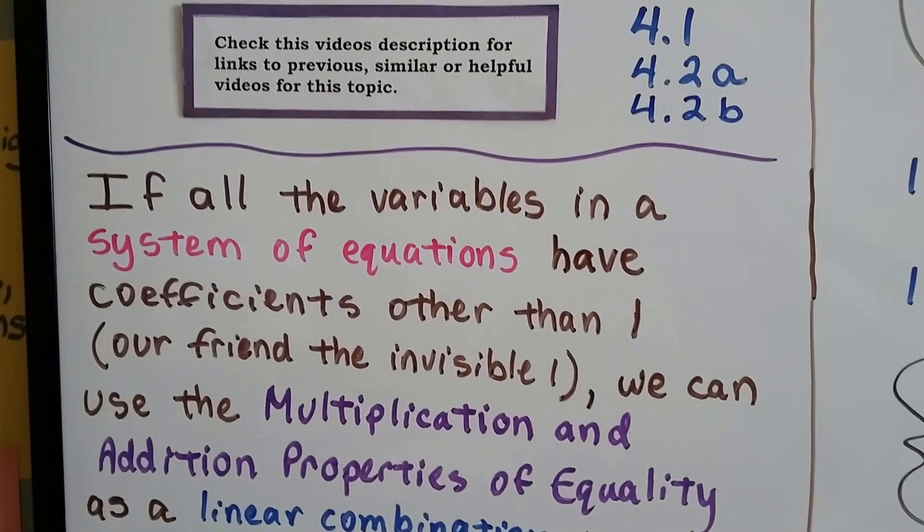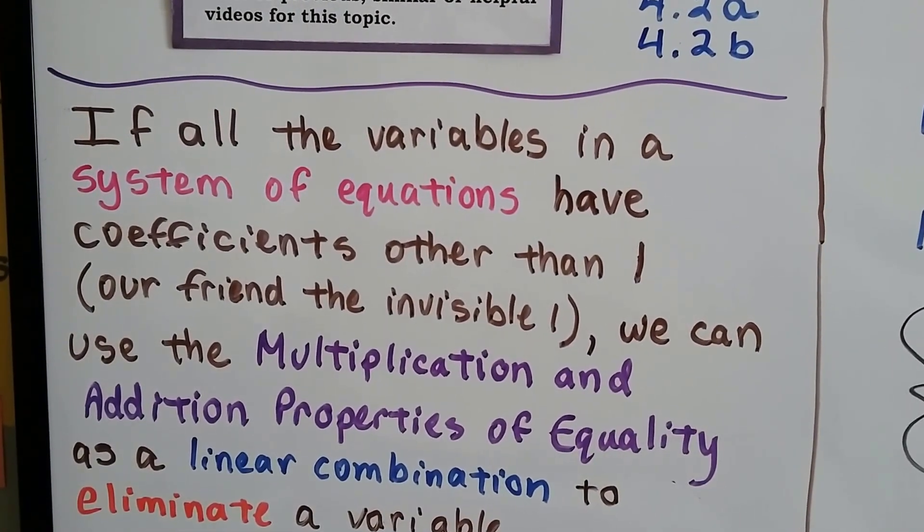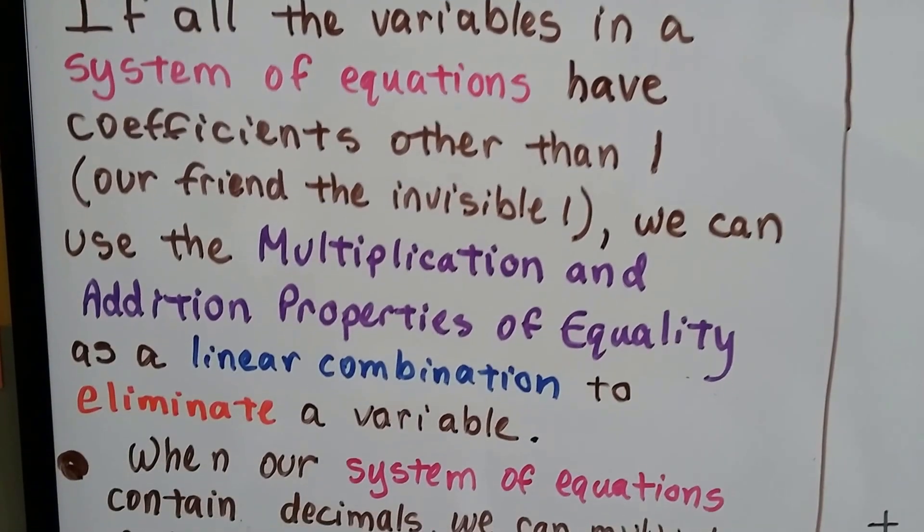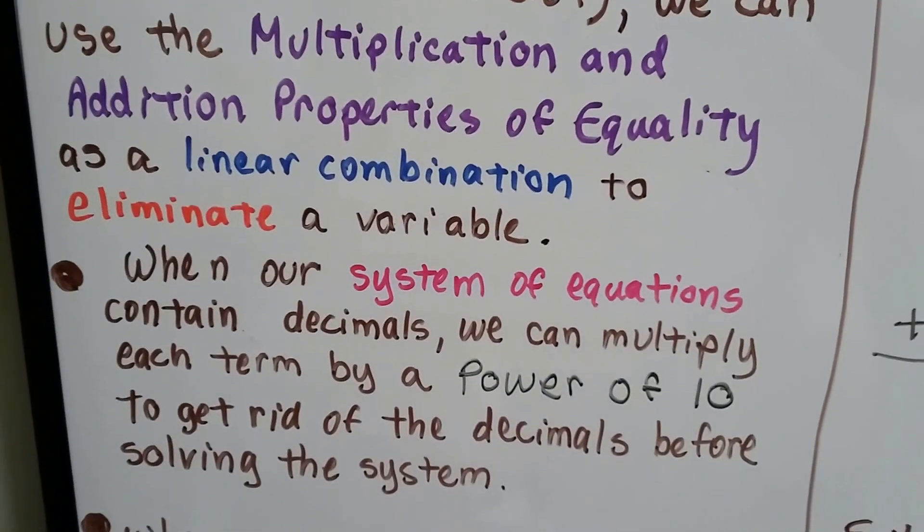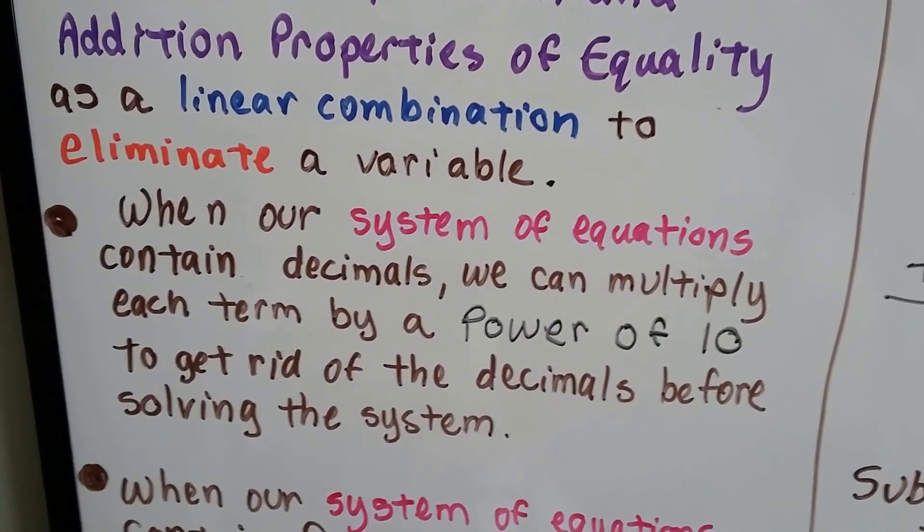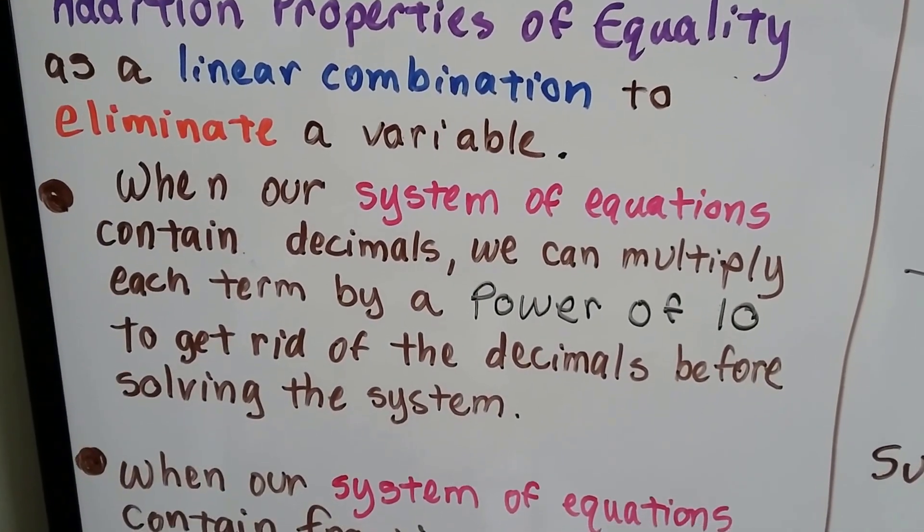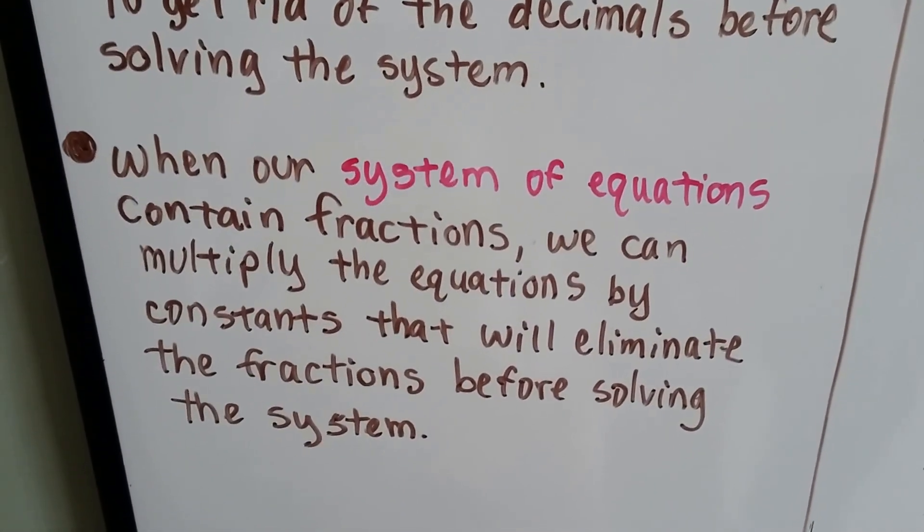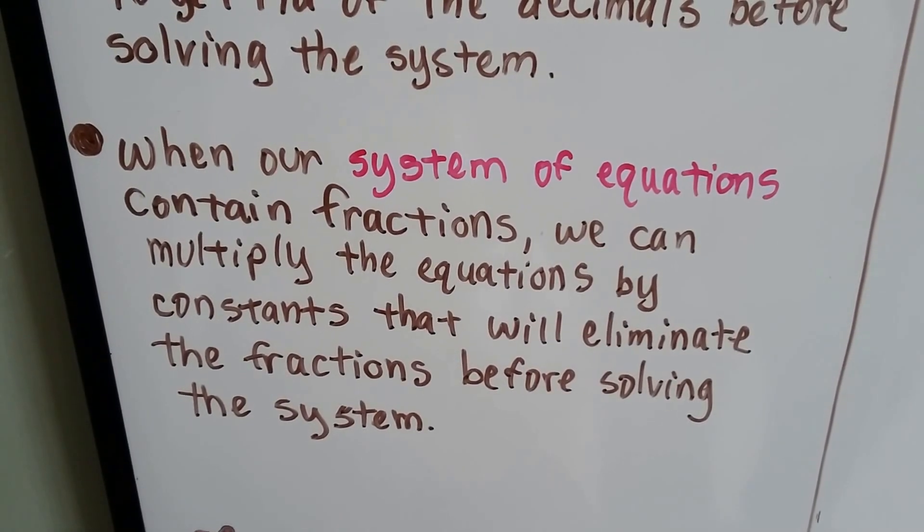If all the variables in a system of equations have coefficients other than 1, our friend the invisible 1, we can use the multiplication and addition properties of equality as a linear combination to eliminate a variable. When our system contains decimals, we can multiply each term by a power of 10 to get rid of the decimals before solving. When our system contains fractions, we can multiply the equations by constants that eliminate the fractions before solving.